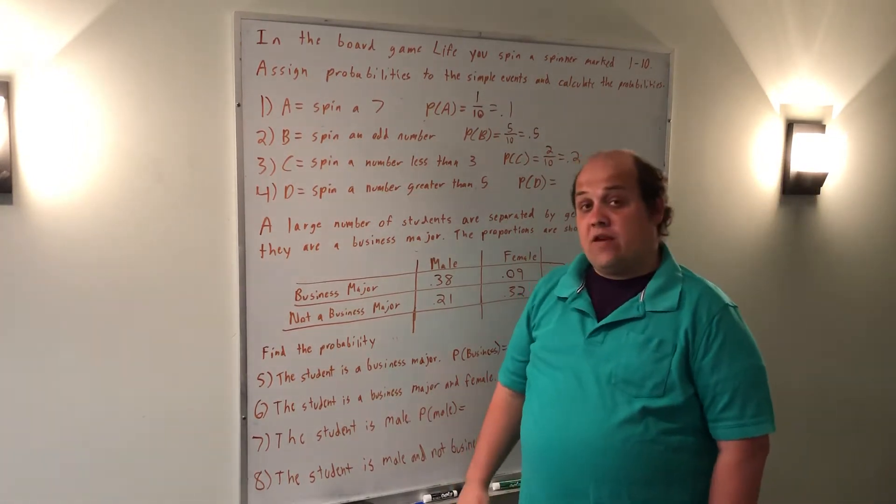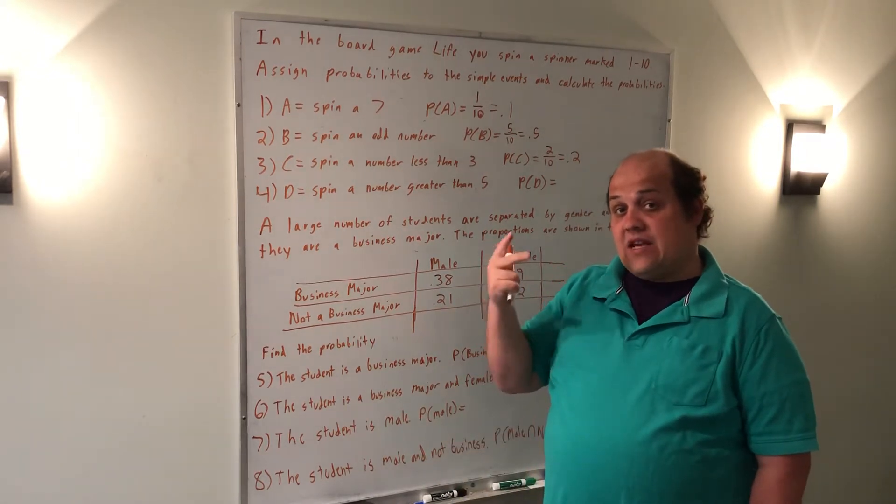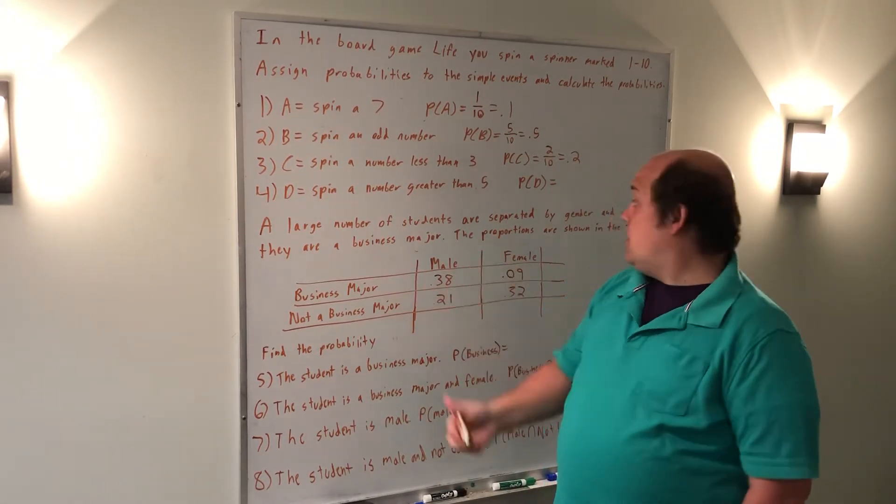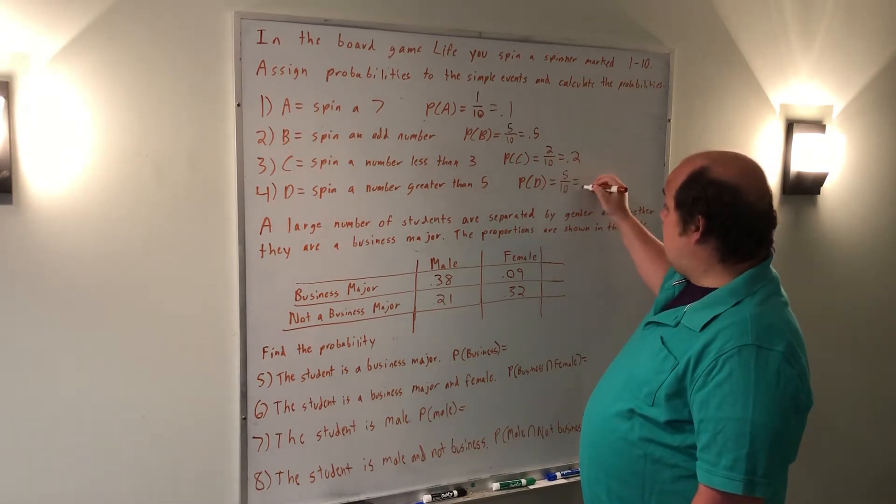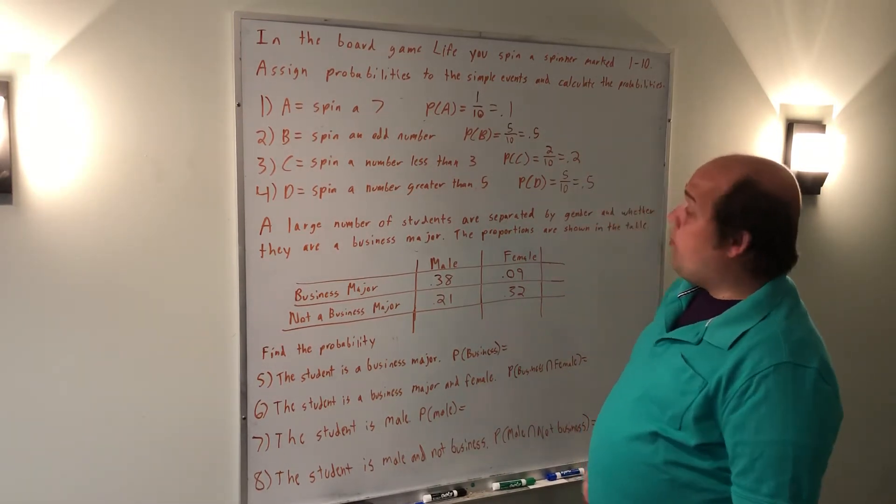For spin a number greater than 5, we had 6, 7, 8, 9, and 10. So there were 5 total numbers greater than 5 out of the 10. That's why it occurs with probability 0.5.